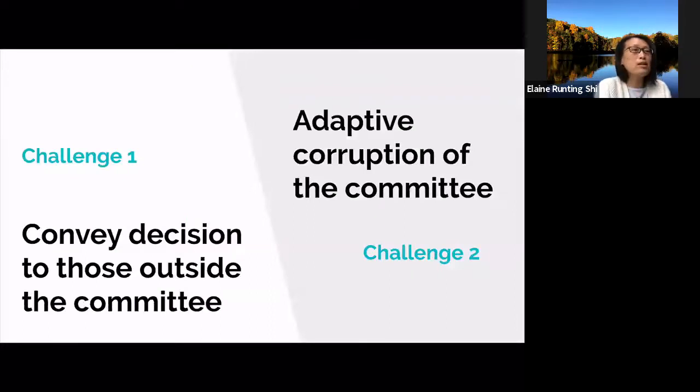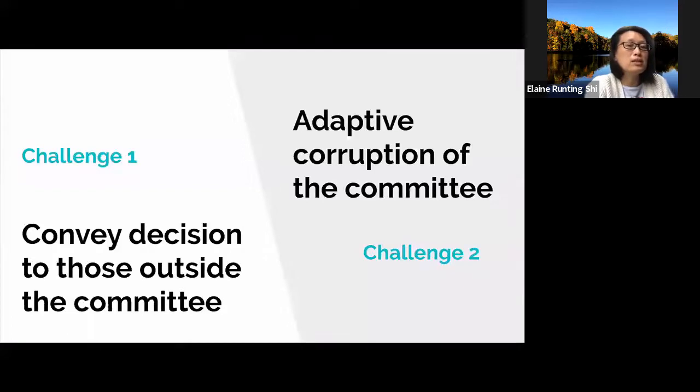So how can we achieve a result like this? Our idea is inspired by the committee election idea, but to make it work, there are two challenges we have to overcome. First, we need to figure out a way for the committee to convey its decision to non-committee members. Second, we need to find a way to elect the committee secretly such that the adversary cannot simply adaptively corrupt the entire committee and disrupt the consensus. I will first focus on solving the first challenge, and that is how to convey the committee's decision to non-committee members. And then I'll talk about the second.